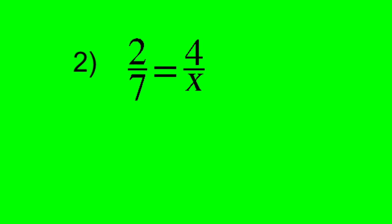And we did another one here where we don't know the denominator on the second fraction. What do I multiply by 2 to get 4? Well, I multiply 2. And then I do the same thing to the bottom. And 7 times 2 means that x is equal to 14.